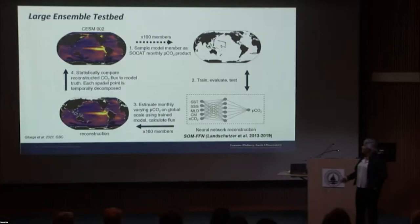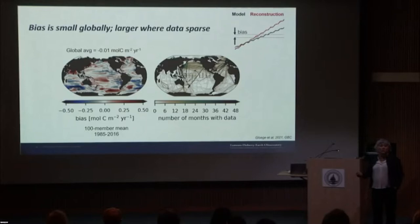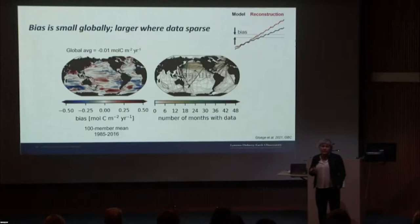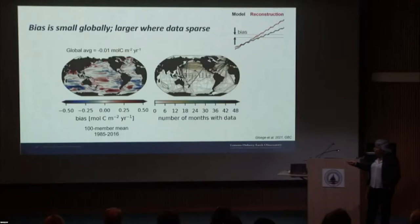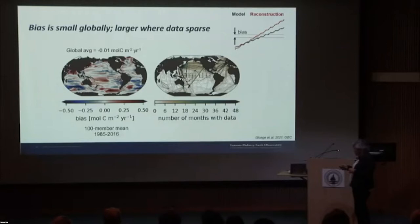We've done this for 100 members from 1985 to 2016. We find the bias is basically zero globally. Locally in the northern hemisphere, the bias is extremely small; even in the tropics, it's pretty small. Regionally, we get some larger biases in the southern hemisphere, which would be a concern for understanding the mean flux in, say, the Indian sector of the Southern Ocean. But over large regions, the bias is basically zero.